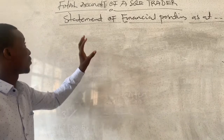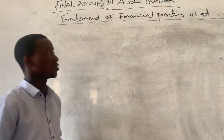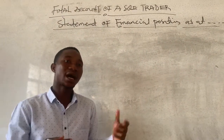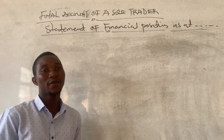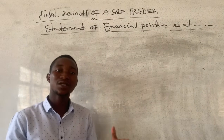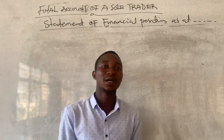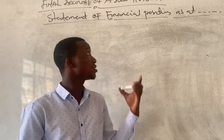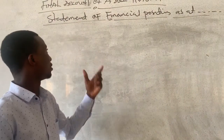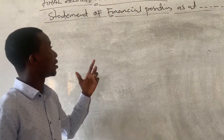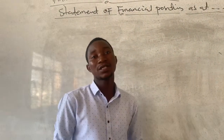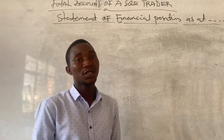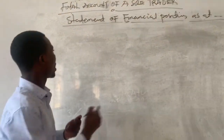Before we look at the preparation of this statement of financial position, this statement uses the accounting equation to actually show the financial position of the firm or the sole trader. The accounting equation was actually introduced by an Italian mathematician called Luca Pacioli, who introduced it in the year 1494. So we are going to use the accounting equation to depict the financial position of a sole trader.